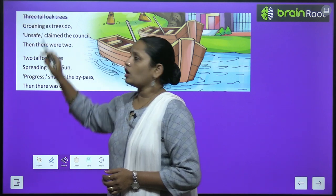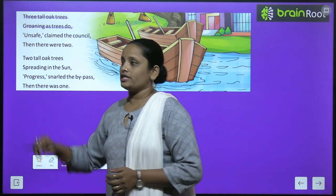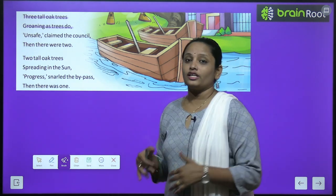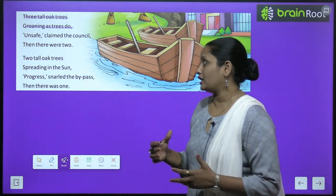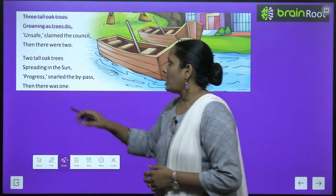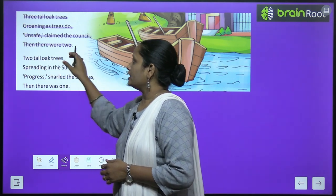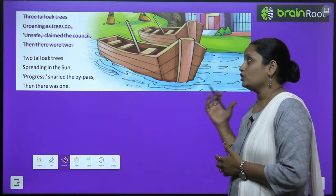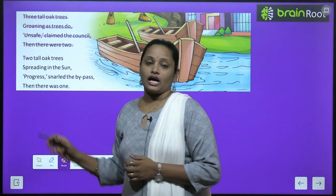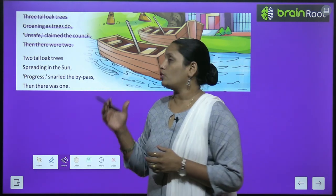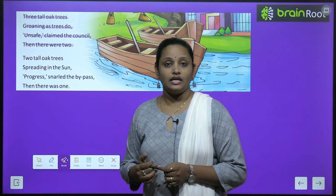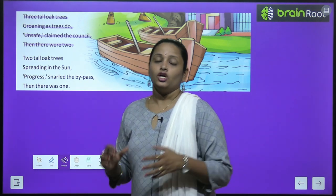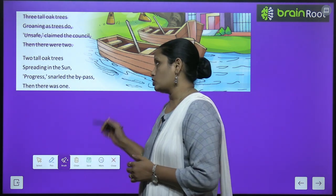'Three tall oak trees groaning as trees do, unsafe claimed the council, then there were two.' تین trees من من میں رو رہے تھے اور عجیب آوازیں نکال رہے تھے۔ جو council تھا — لوگوں کا group — انہوں نے decide کیا کہ یہ پیڑ unsafe ہیں۔ تو انہوں نے ایک پیڑ اور کاٹ دیا، جس کے بعد then there were two — دو trees بچے۔